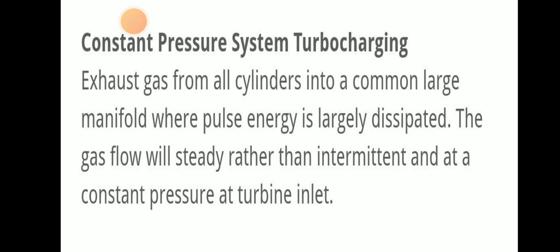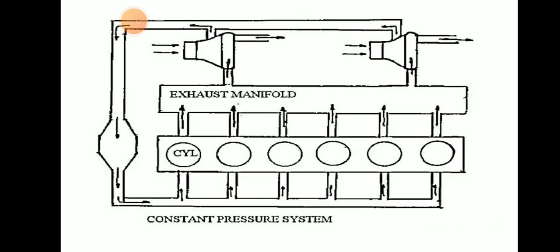In the constant pressure system, exhaust gas from all cylinders comes into a common large manifold where pressure energy is largely dissipated. The gas will flow in a steady rather than intermittent manner, so there is constant pressure at the turbine inlet. All gases from different cylinders come to a common manifold and from there in a steady manner they go to the turbine inlet.